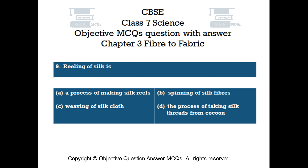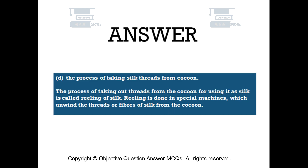The right answer is Option D — The process of taking silk threads from cocoon. The process of taking out threads from the cocoon for using it as silk is called reeling of silk. Reeling is done in special machines which unwind the threads or fibers of silk from the cocoon.